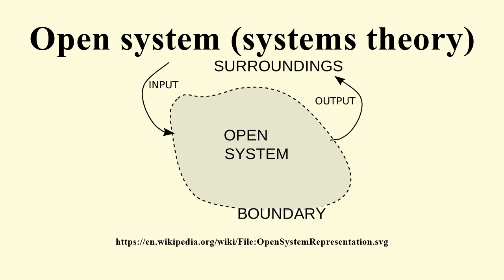An open system is contrasted with the concept of an isolated system which exchanges neither energy, matter, nor information with its environment. An open system is also known as a constant volume system or a flow system.